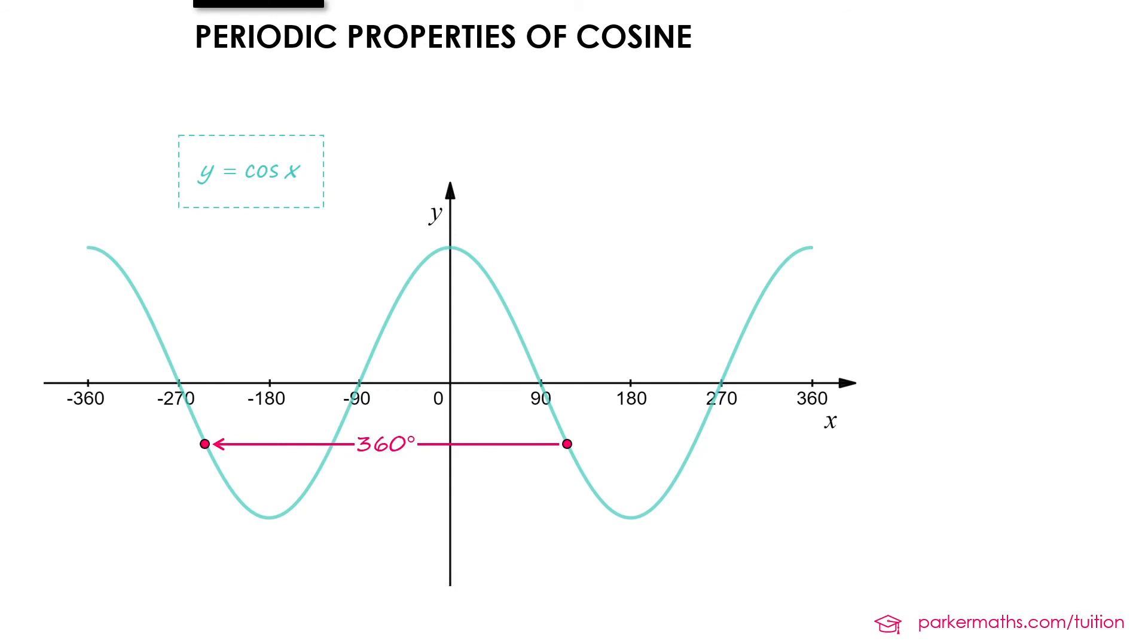And so the periodic property for cosine looks very similar to sine. We've got cos theta equals cos theta plus or minus 360 degrees.